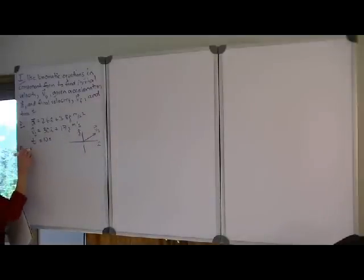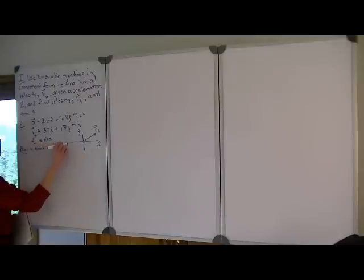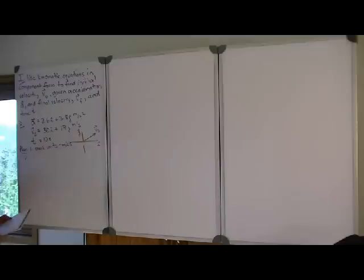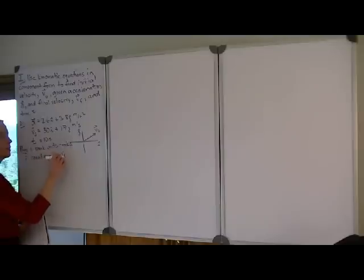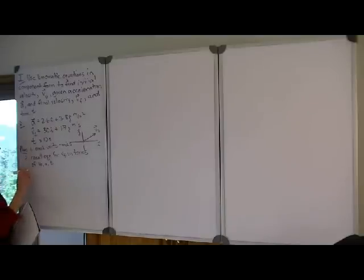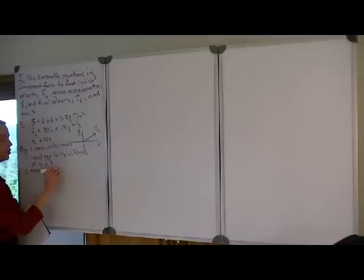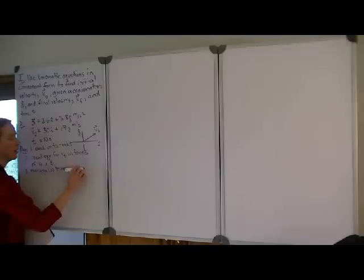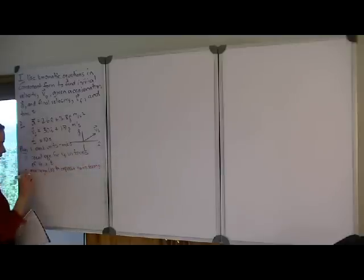As we make a plan for solving this problem, a good first step in any physics problem is to check the units to make sure they're in MKS units, and if not, to convert them. Secondly, we want to recall the equation of motion for the final velocity in terms of initial velocity, acceleration, and time. Since we're asked to find the initial velocity, we want to rearrange the equation to express the initial velocity in terms of the other quantities — the final velocity, acceleration, and time.